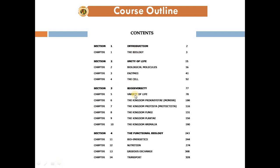The first year biology course has a total of 14 chapters, and these 14 chapters are divided into four sections. In the first section, there is a chapter called Introduction. The second section is Unity of Life, which contains three chapters.